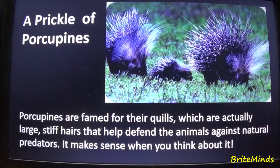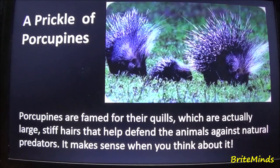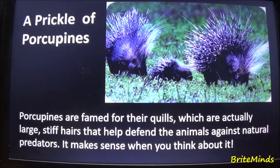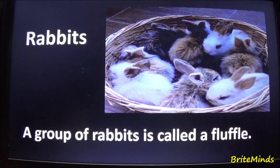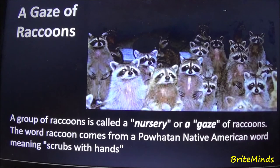A group of porcupines is called a prickle of porcupines. Porcupines are famed for their quills, which are actually large, stiff hairs that help defend the animals against natural predators — it makes sense when you think about it. Rabbits: a group of rabbits is called a fluffle. Raccoons: a group of raccoons is called a gaze of raccoons.